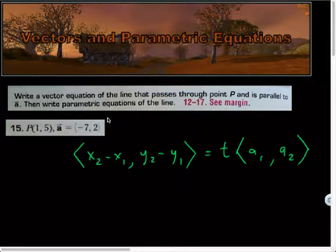Then write parametric equations of the line. So the vector equation of a line looks something like this, where I've got the vector that passes through two points. One of those points is going to be generic for us in the terms of X and Y. And that's equal to some scalar T. This scalar usually, in modeling cases, ends up representing time multiplied by vector A.